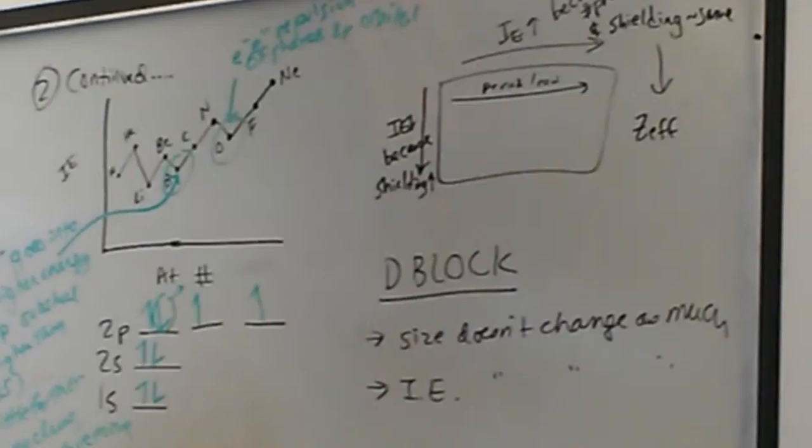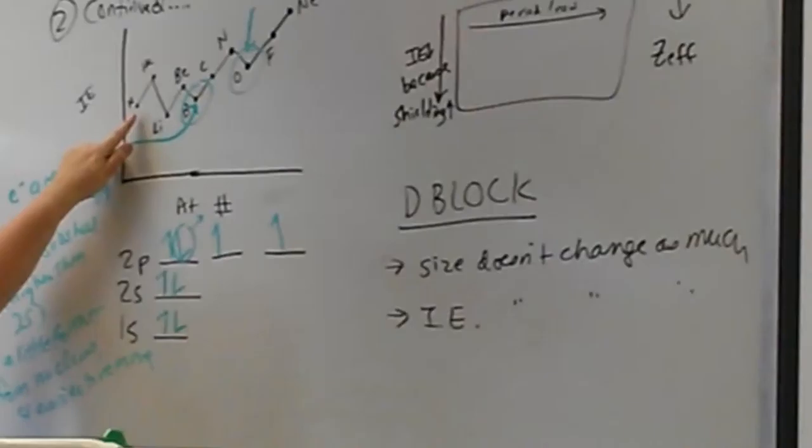Ian, notice as you go left to right across any row, what happens to ionization energy? So from hydrogen to helium it's going to increase, and from lithium to neon it's going to increase. Okay, that was the easy part.